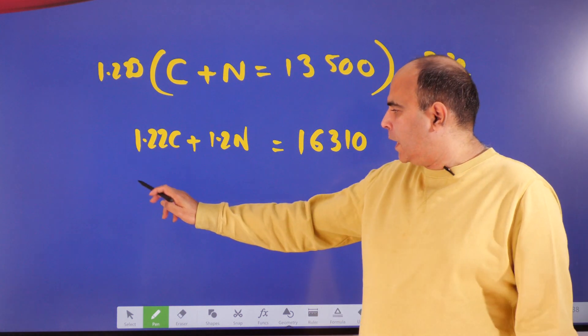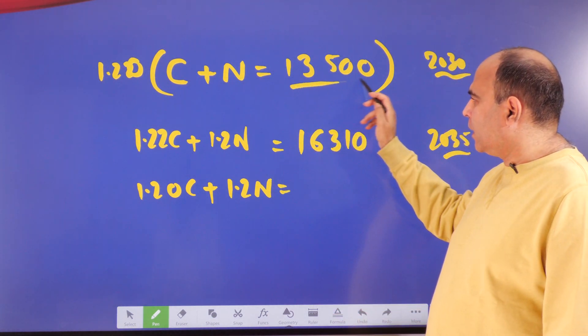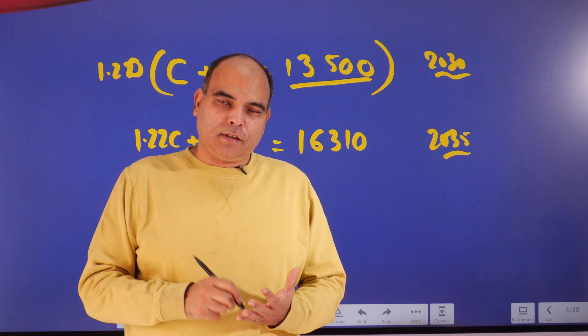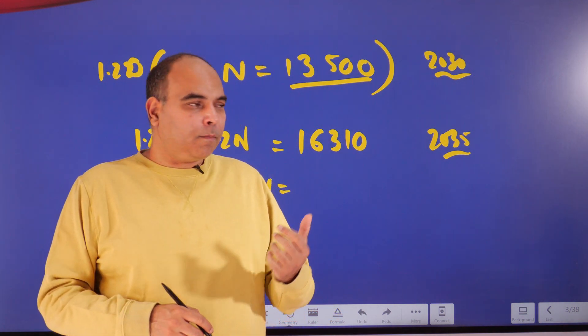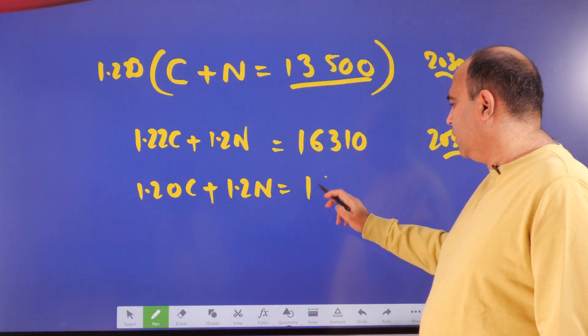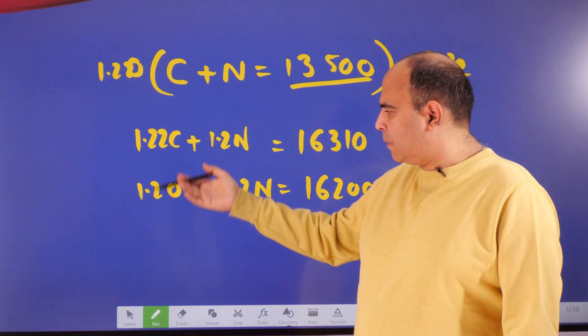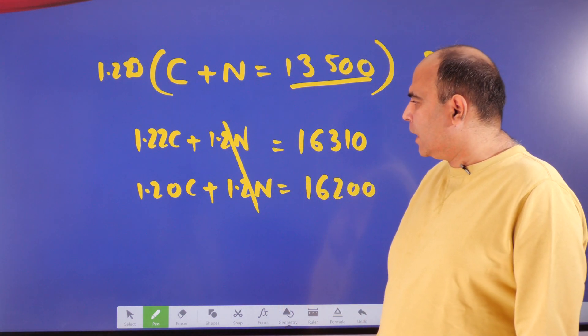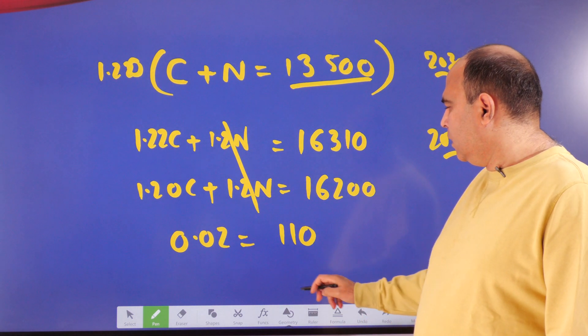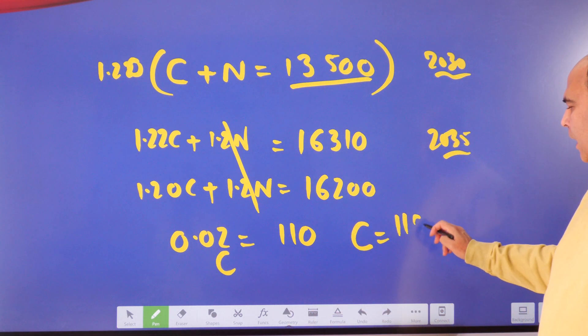That calculation you should be able to do mentally. 13,500—10% is 1,350, so if you increase it by 20%, it will become 2,700 more, so 13,500 will become 16,200. That is the calculative aspect of this. Now you can subtract this minus this. The N will get canceled, then you get 0.02C equals 110. And 0.02C equals 110, the value of C is 110 divided by 0.02.